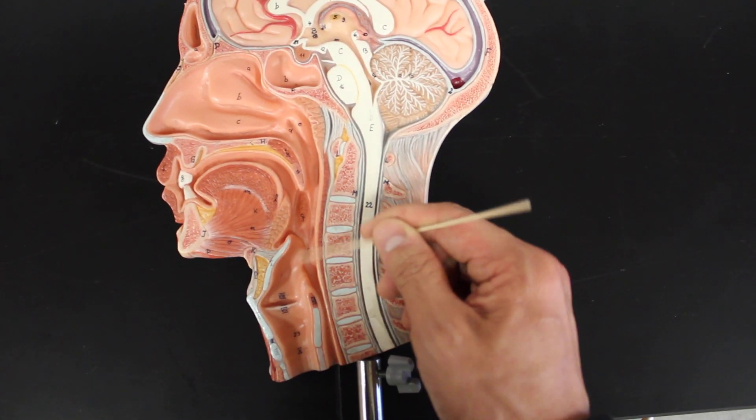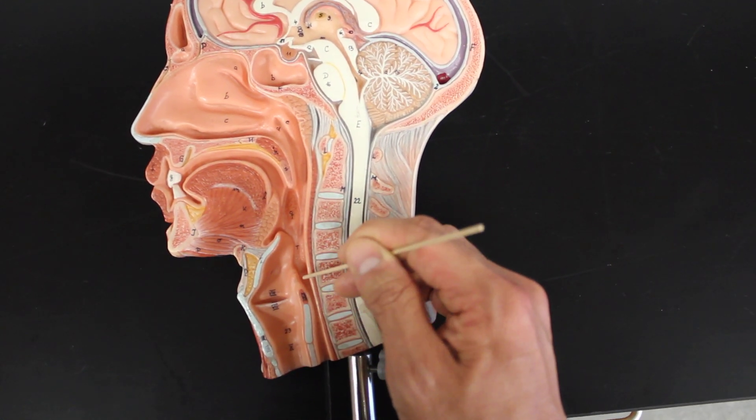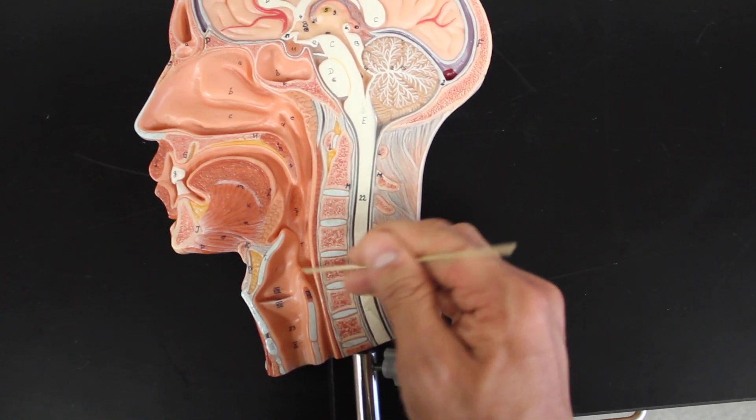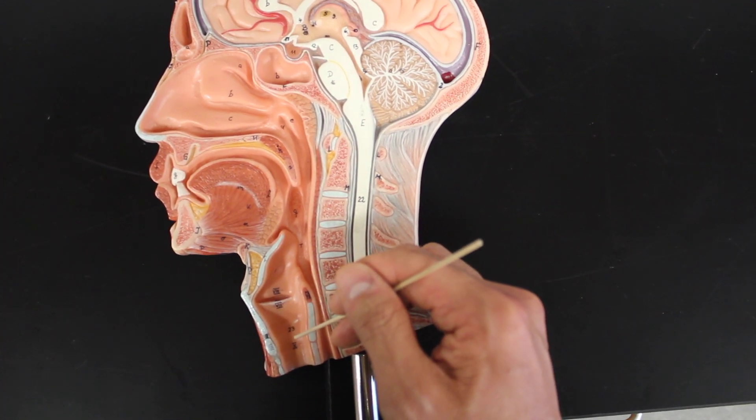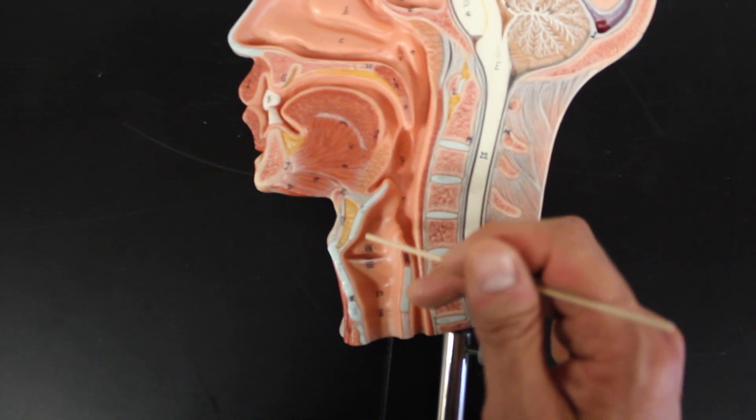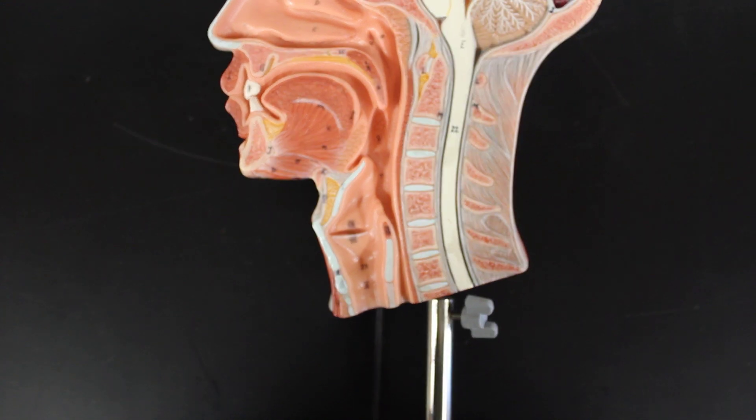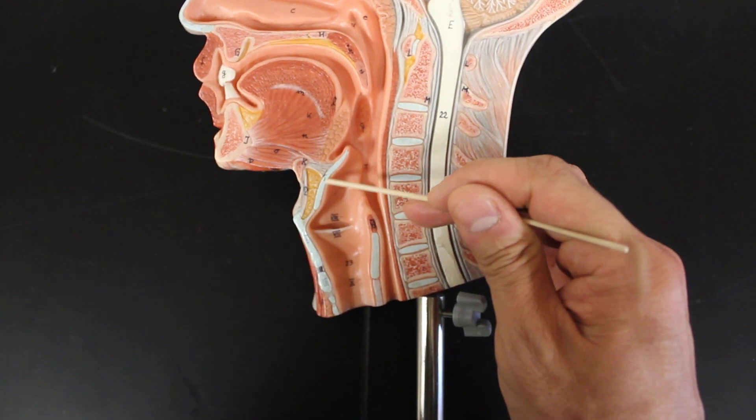After that, we get into the laryngopharynx, and you can see the different structures. If we go this direction, this is the esophagus, and we eat and swallow into our stomach. But this way, this is our larynx, in which we will then go into our lungs. What we'll see in this area, we'll find structures that will help for our voice production, as well as swallowing.